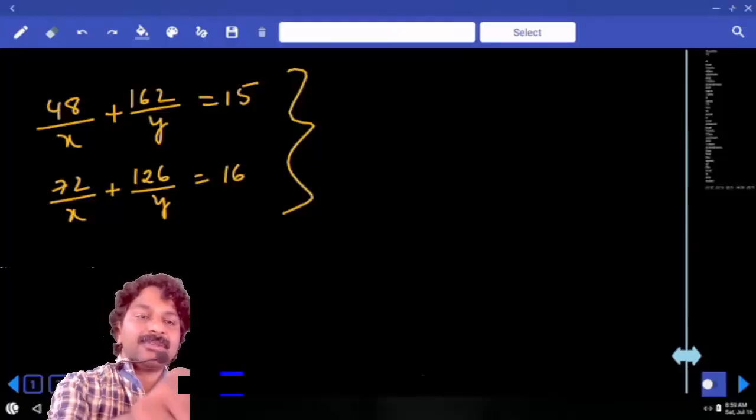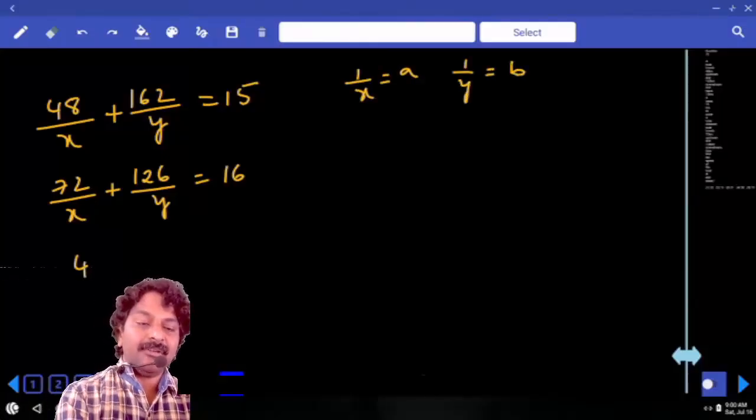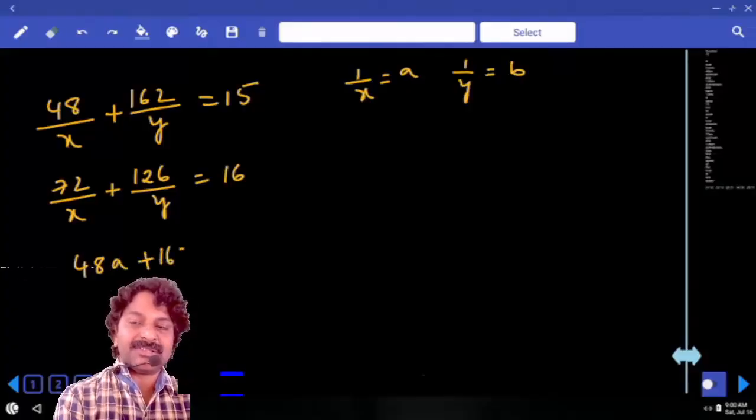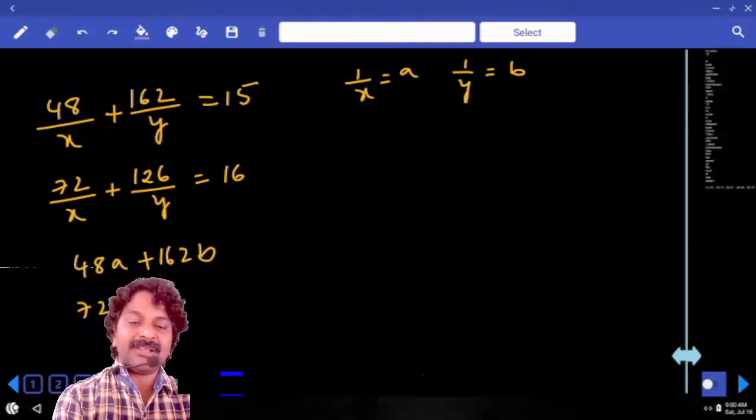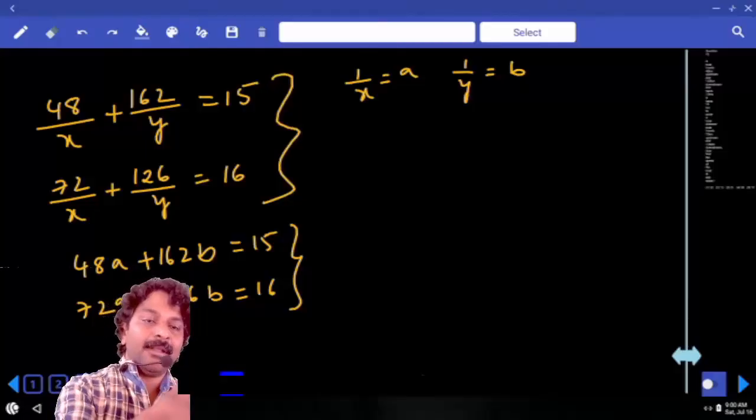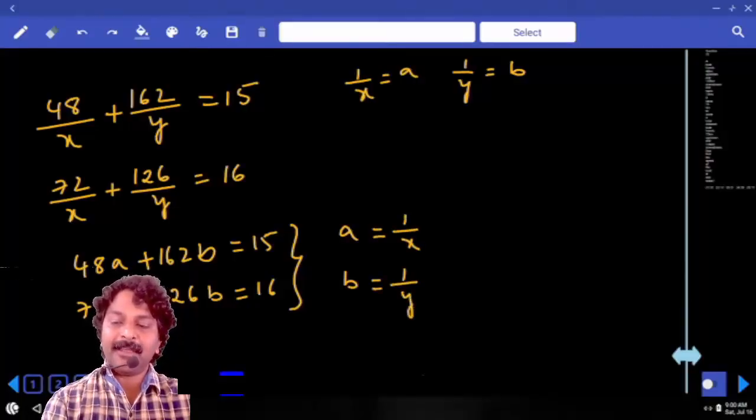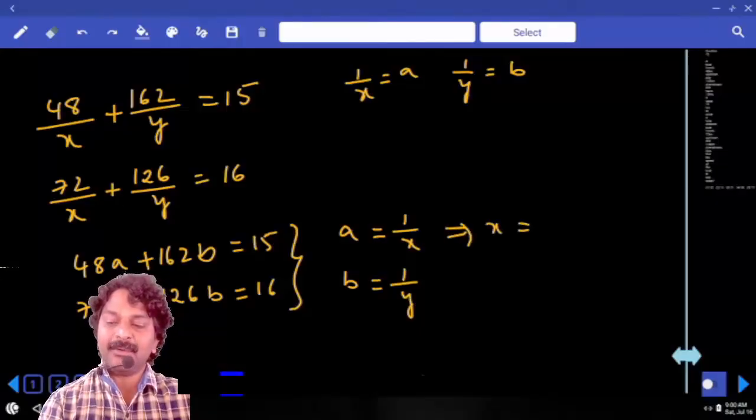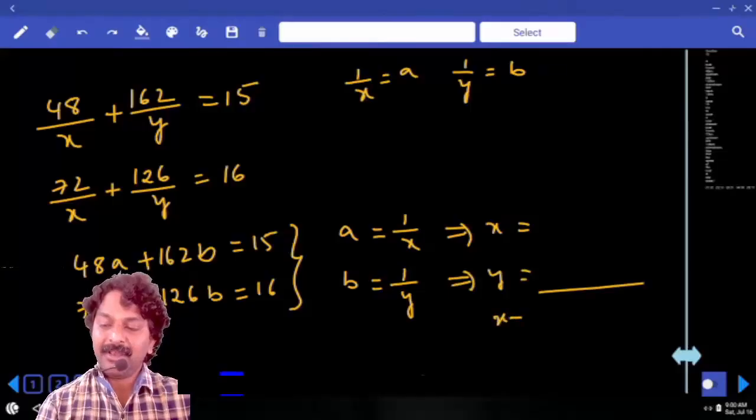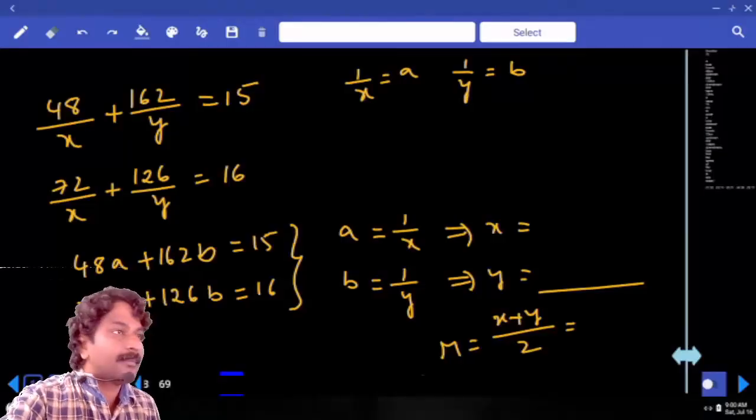So what I will do is, treat 1 by x as a and 1 by y as b. Then it becomes 48a plus 162b, 72a plus 126b which is 15 and then 16. Solving these two equations is easy, better than this, correct? Now, after this, you will get a value and then b value which is 1 by x and 1 by y. From this, we can calculate x value and then y value. After this, when you add and then divide it by 2, then you will get m. Because x is upstream speed and y is downstream speed. Takes lot of time.